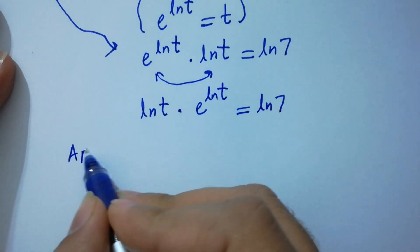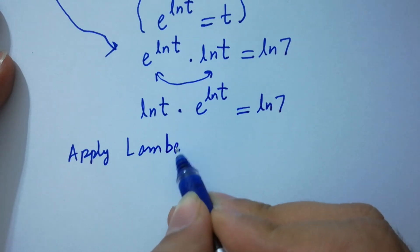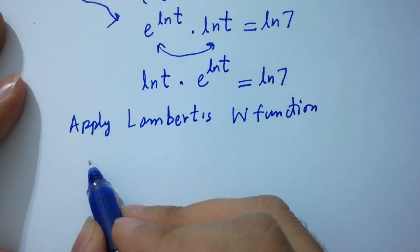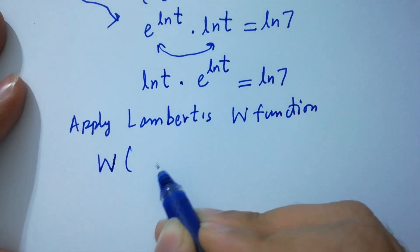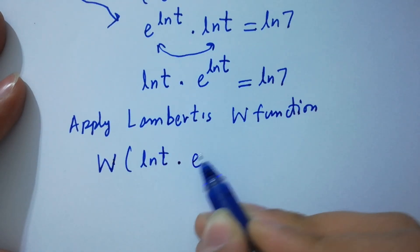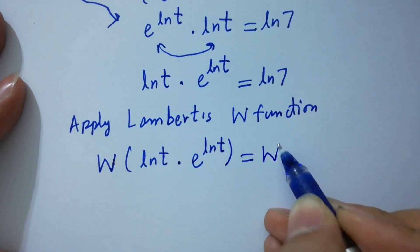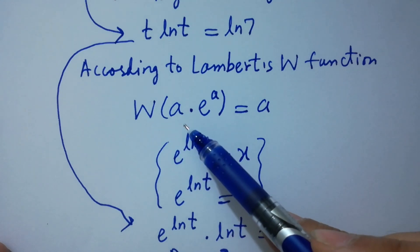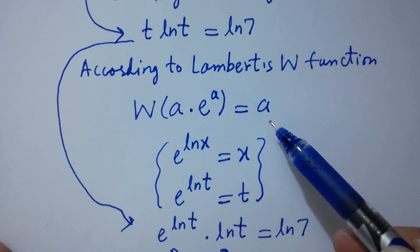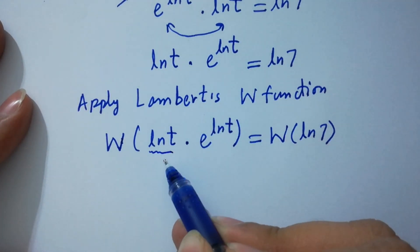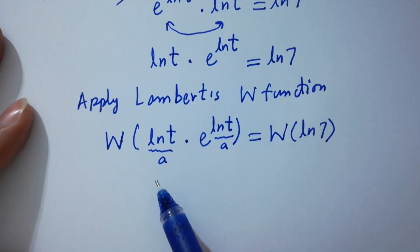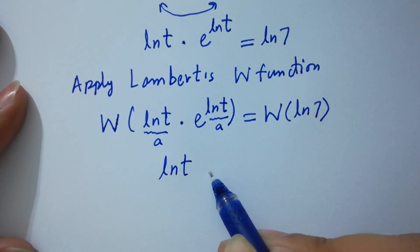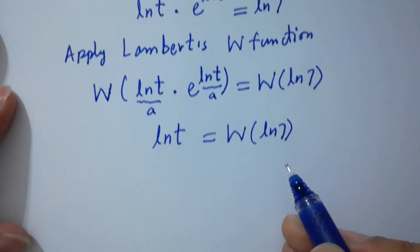So, apply Lambert's W function: W(ln t · e^(ln t)) = ln t. So W(ln t) = W(ln 7). Since W(a · e^a) = a, we have W(ln t · e^(ln t)) = ln t = W(ln 7).